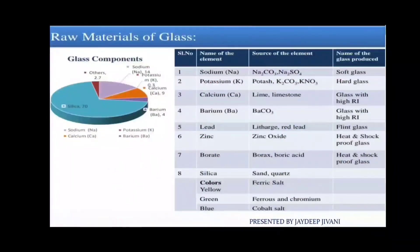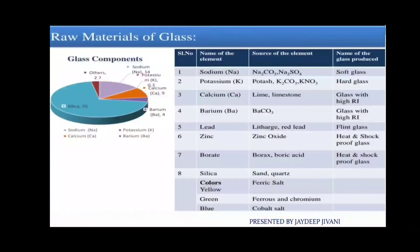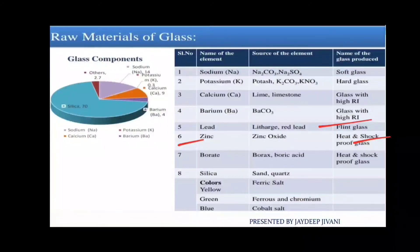Lead is sourced from litharge or red lead and is used for the formation of flint glass. The next element is zinc. Zinc oxide is used for heat and shock proof glass.